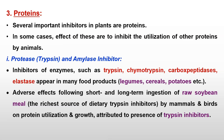Next is proteins. There are different proteins which may act as anti-nutritional factors. First are protease and amylase inhibitors. They inhibit different enzymes such as trypsin, chymotrypsin, elastases, which appear in many food products like legumes, cereals, and potato. This protease inhibitor may be present in different sources, and they have adverse effects following short and long ingestion of raw soybean meal, which is the richest source of dietary trypsin inhibitor. They affect protein utilization and growth performance of the animal.